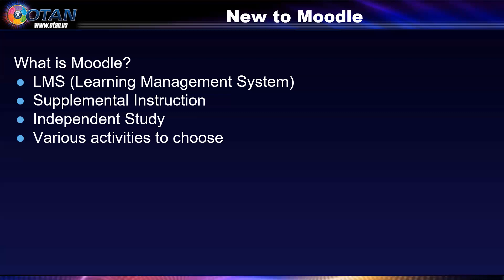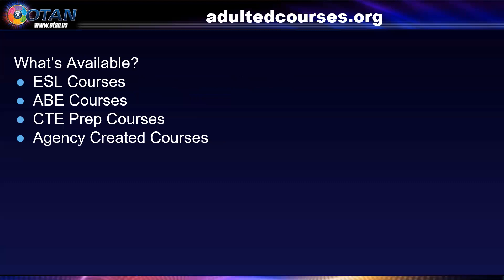You may also choose to do a hybrid of instruction where you can teach concepts and do scaffold activities with the students, then independently on their own time, they complete a homework assignment or quiz. In the adultedcourses.org website, there are many different Moodle courses besides EL Civics — for example, ESL courses, ABE courses, CTE prep courses, and agency-created courses.